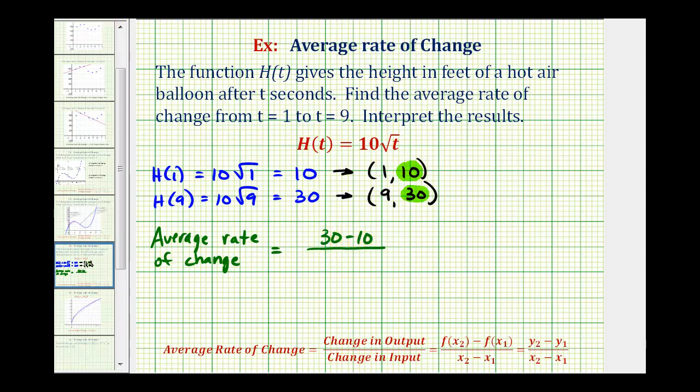We'll divide by the change in the inputs, or in this case, the change of t. Here we have t equals 9 and t equals 1, so the change in t would be 9 minus 1. So we have 20 divided by 8, which does simplify to 5 over 2. If we divide this out, it's equal to 2.5. So the average rate of change from t equals 1 to t equals 9 is equal to 2.5.